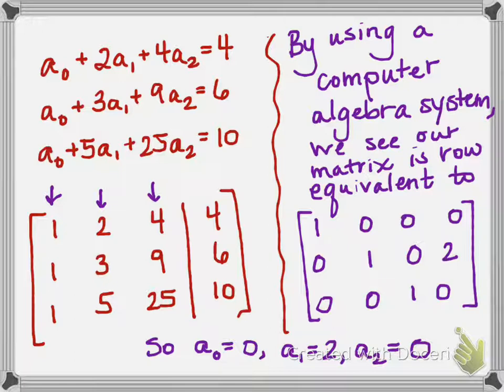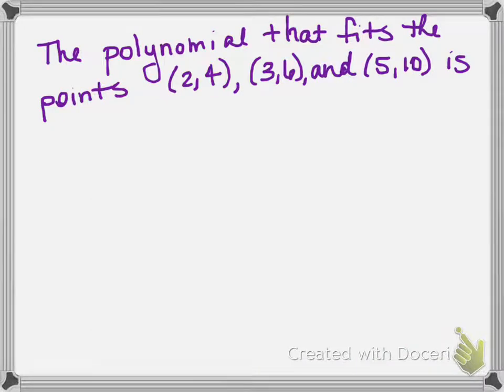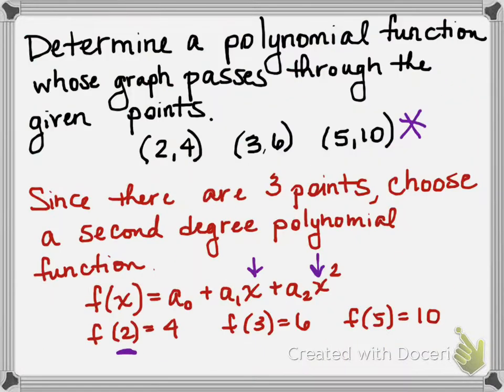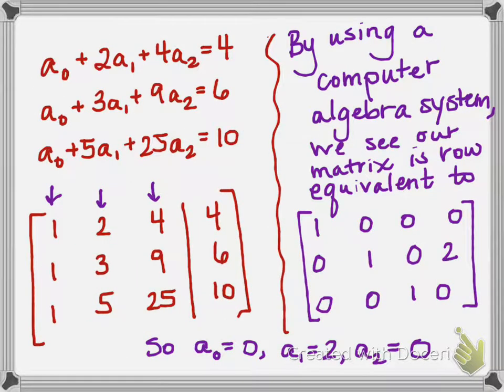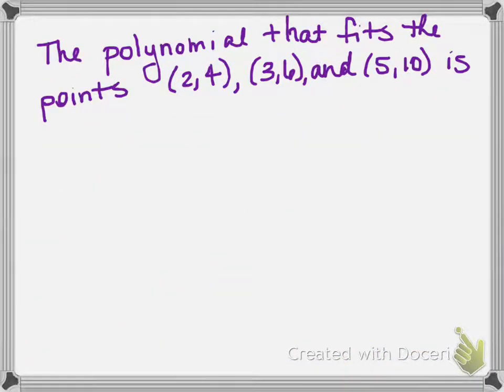Remembering what we're supposed to be doing, we want to find a polynomial that fits the points (2,4), (3,6), and (5,10). We had represented it as a0 + a1x + a2x². And we decided that a1 is 2 and a2 is 0. So we get that our polynomial is f(x) = 2x.